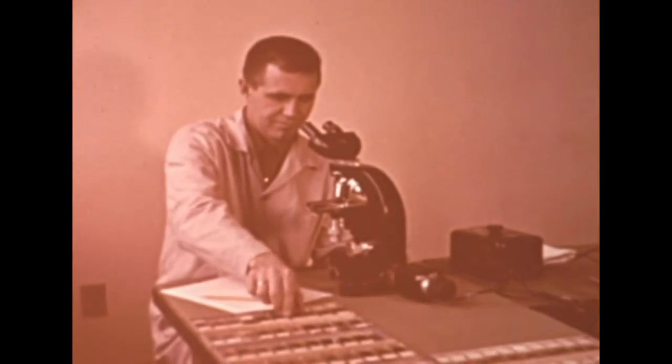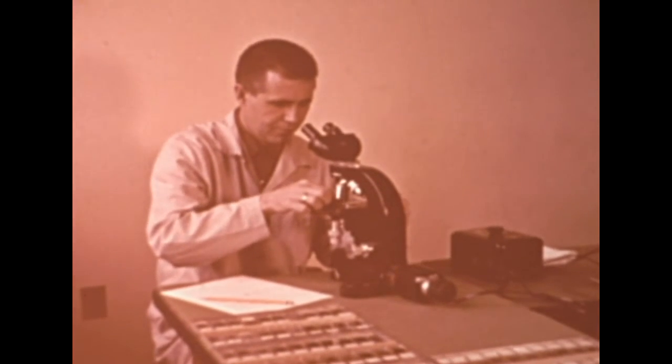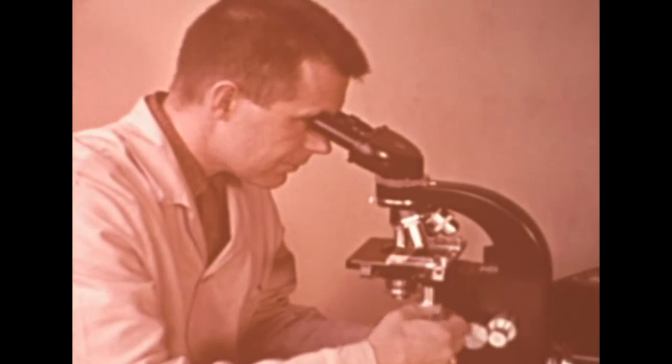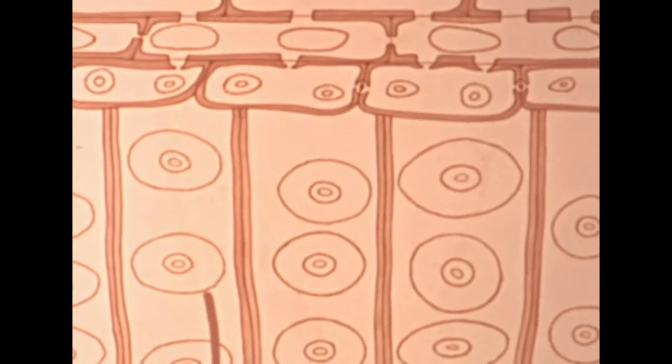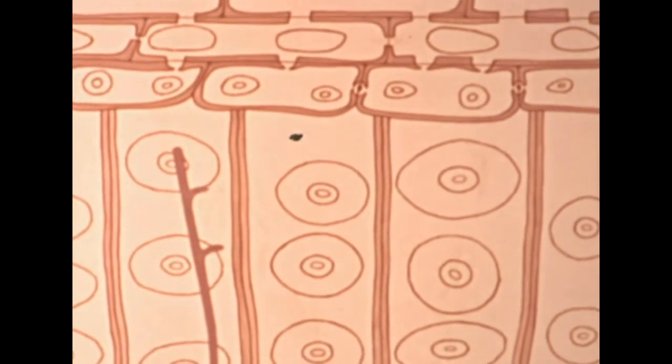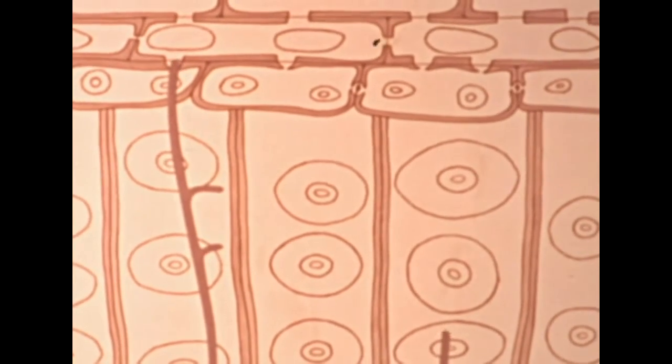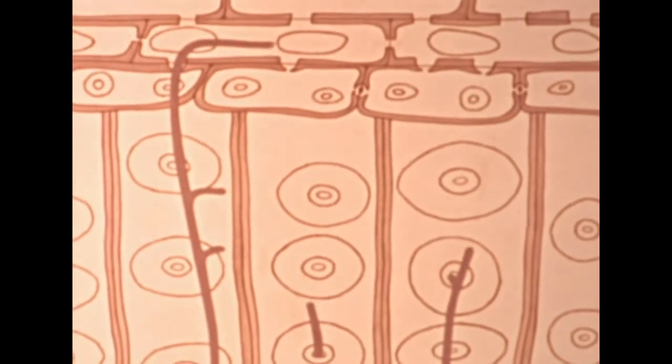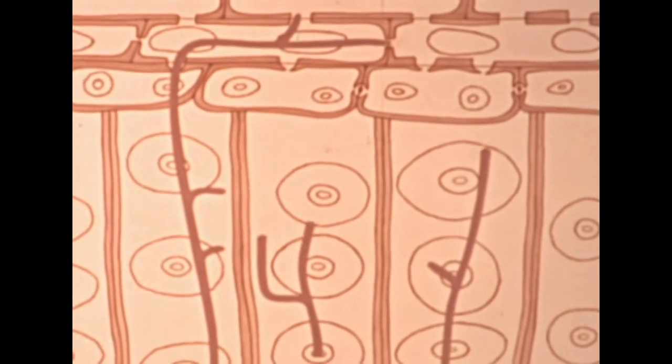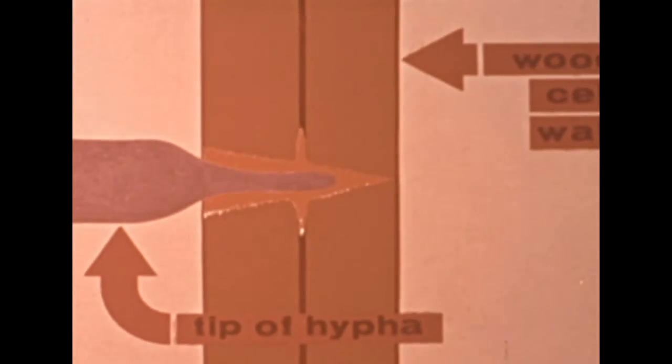If we cut a thin section from such a sample and look at it with a microscope, we see that the fungus body consists of microscopic branching thread-like filaments penetrating the wood. Now by animation, we see greatly enlarged the filamentous tube-like hyphae of a wood-destroying fungus growing in the cavities of wood cells and gradually extending throughout the wood. The woody cell wall is digested by enzymes excreted by the fungus. By this dissolving action, the tip of a hyphae passes readily from one cell to the next, leaving characteristic boreholes.